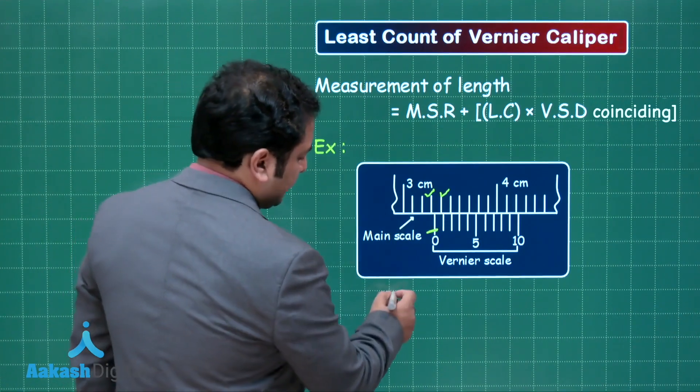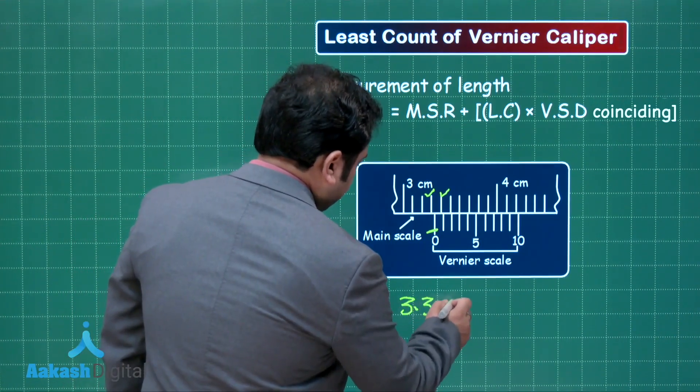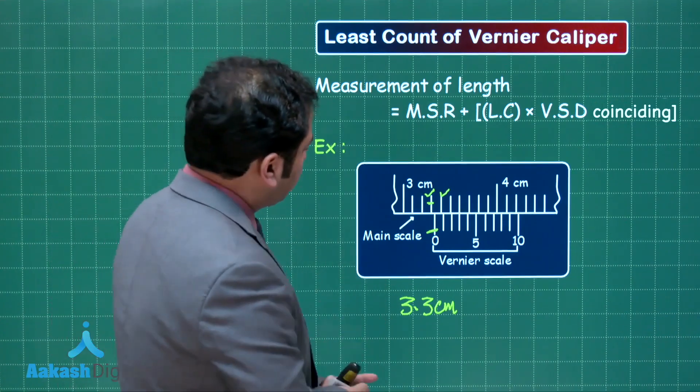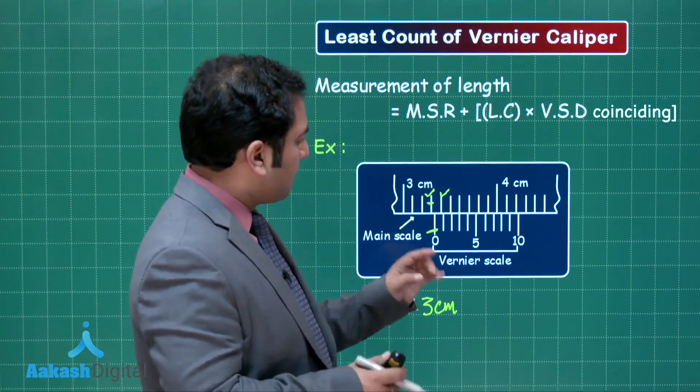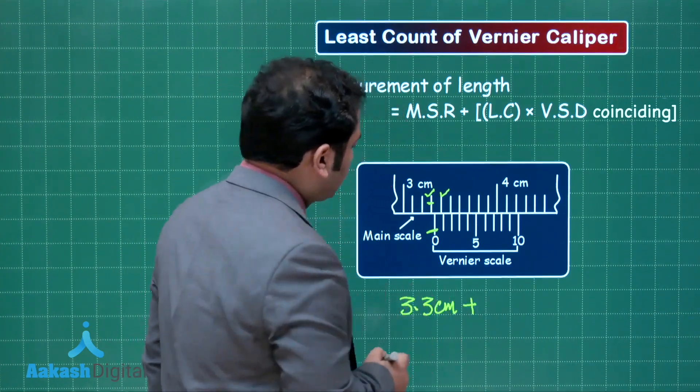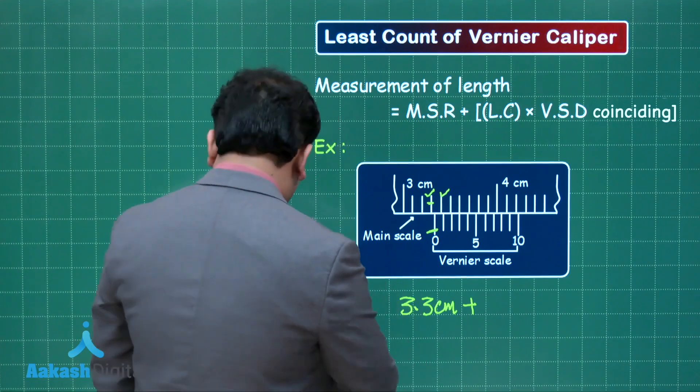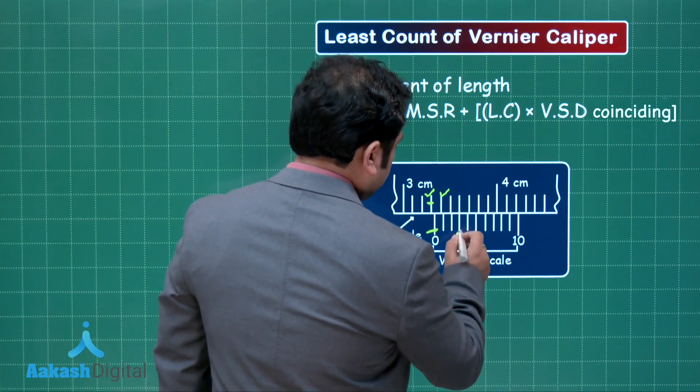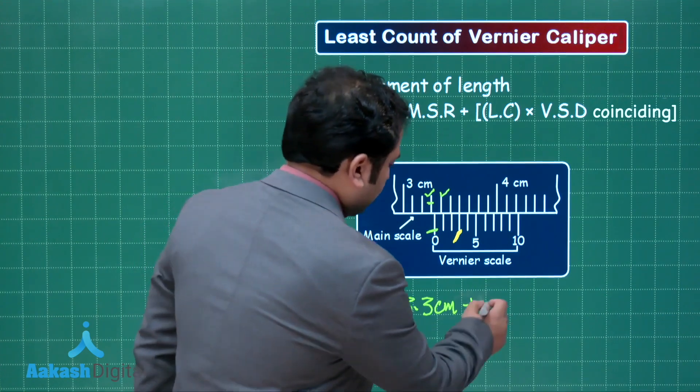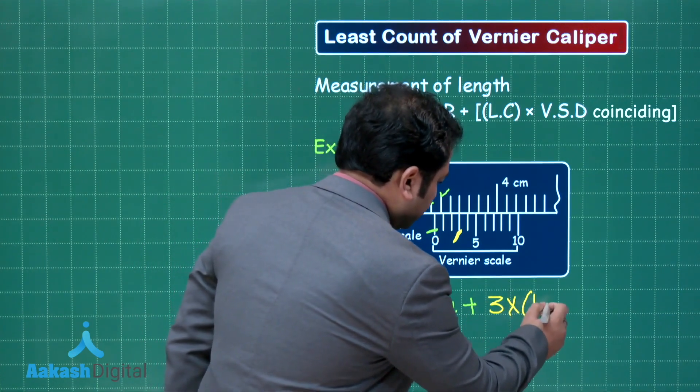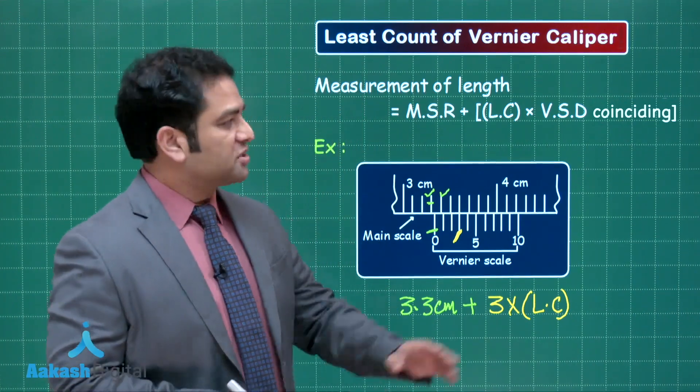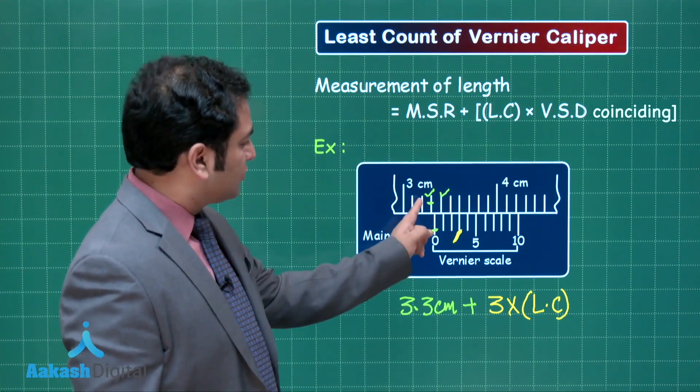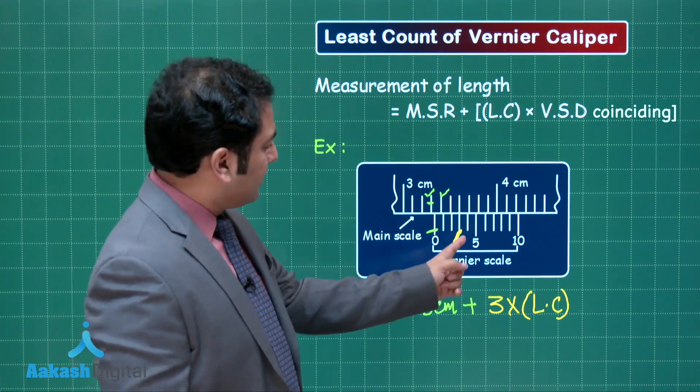Zero of Vernier is between this and this, so you'll talk about 3.3 centimeter, because zero of the Vernier is after 3.3 main scale division. Plus, you need to understand which division of the Vernier is coinciding. You could see here the Vernier which is coinciding is this—one, two, three. So that will be 3 multiplied by the least count of the Vernier caliper.